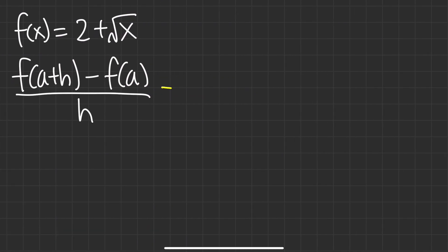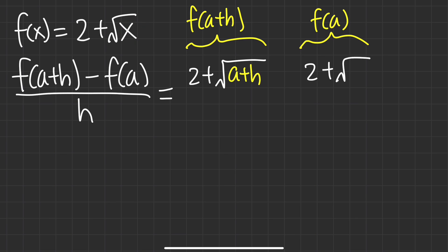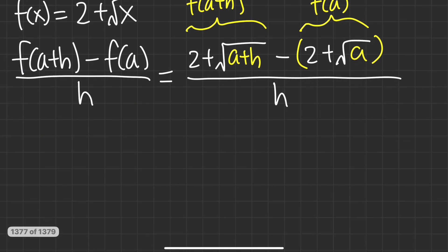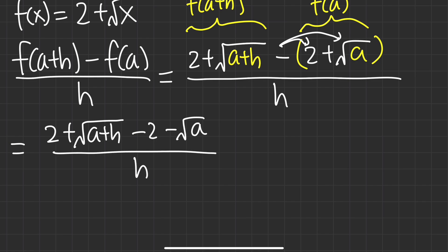Now let's do a square root case. We plug a plus h into the x, giving 2 plus square root of a plus h — this is f of a plus h. Then we need f of a, which is 2 plus square root of a. Subtracting with parentheses around it and dividing by h, distributing the negative gives minus 2 minus square root of a. The 2's cancel, leaving square root of a plus h minus square root of a, all over h.